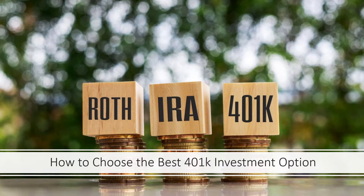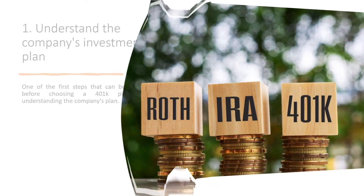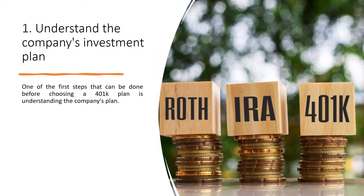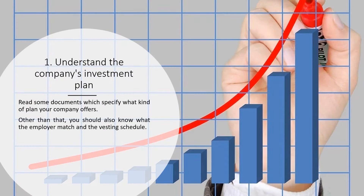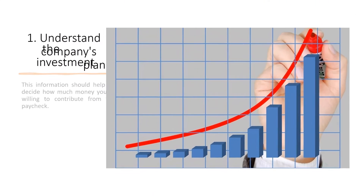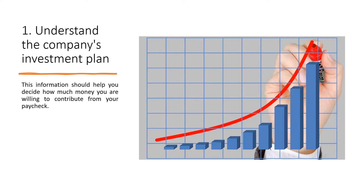1. Understand the Company's Investment Plan. One of the first steps that can be done before choosing a 401k plan is understanding the company's plan. Read some documents which specify what kind of plan your company offers. Other than that, you should also know the employer match and the vesting schedule. This information should help you decide how much money you are willing to contribute from your paycheck.